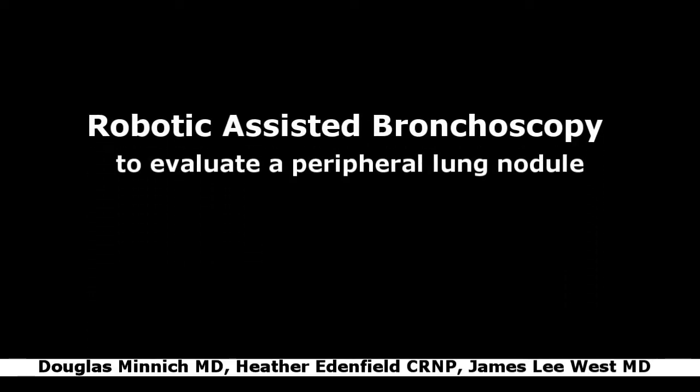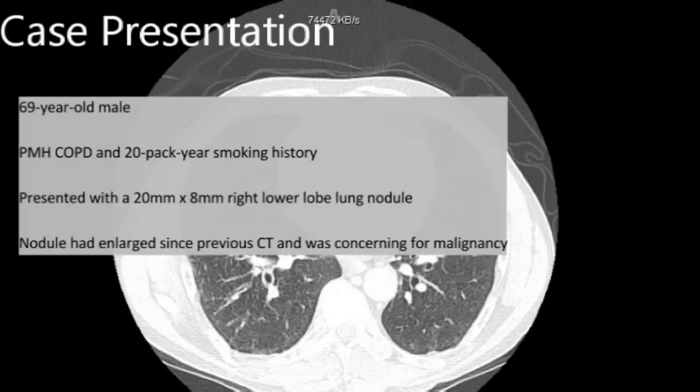We present a case of robotic-assisted bronchoscopy to evaluate a solitary peripheral lung nodule. The patient is a 69-year-old male with a past medical history significant for chronic obstructive pulmonary disease as well as a 20-pack year smoking history. He presented with a 20 by 8 millimeter right lower lobe lung nodule.